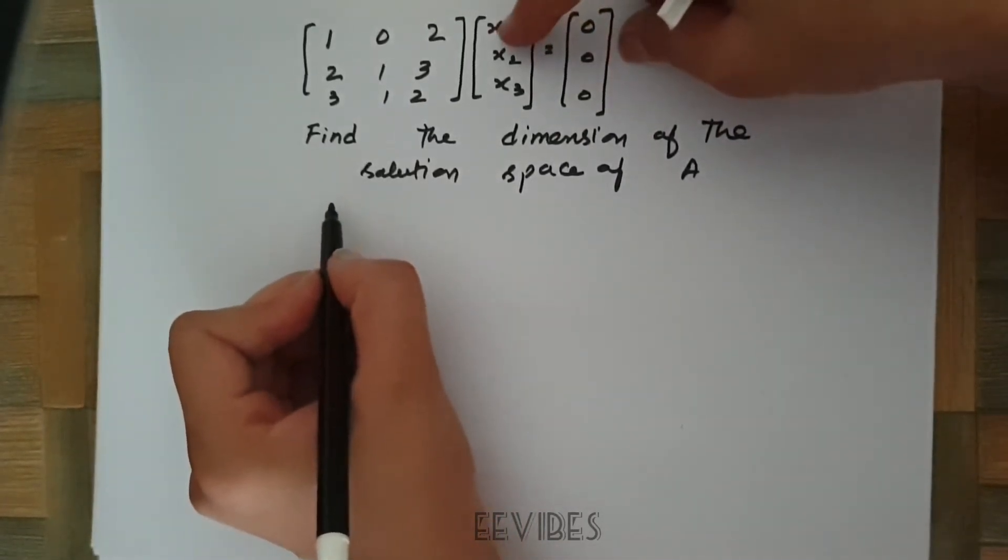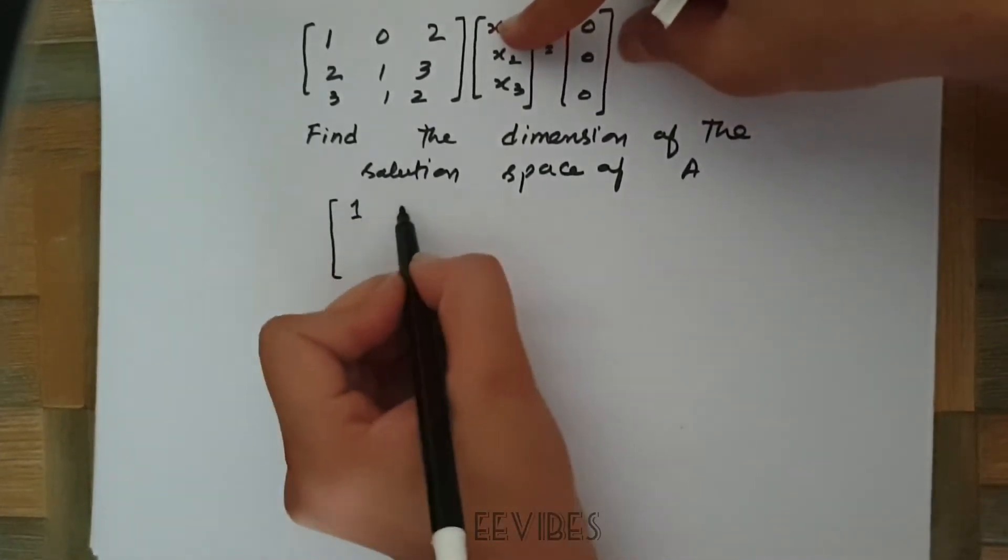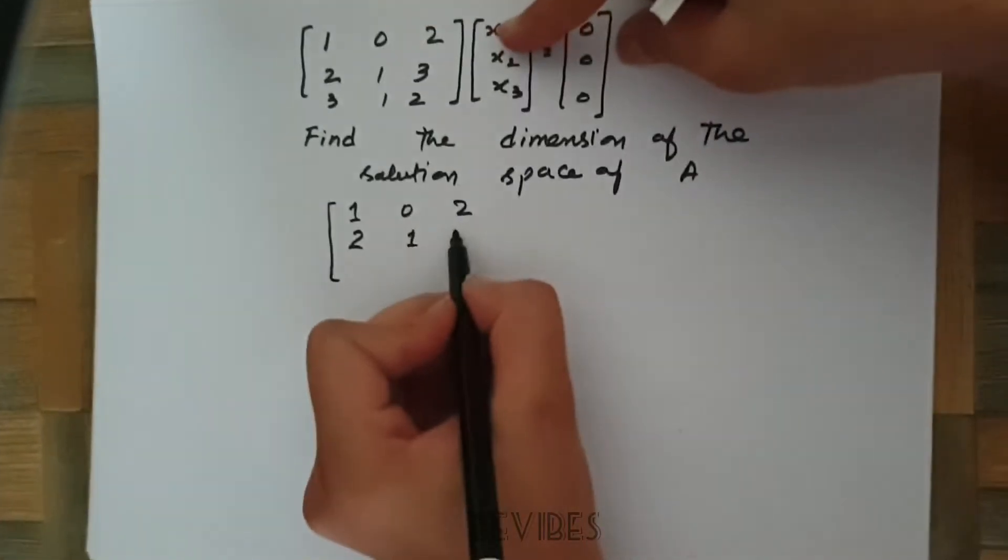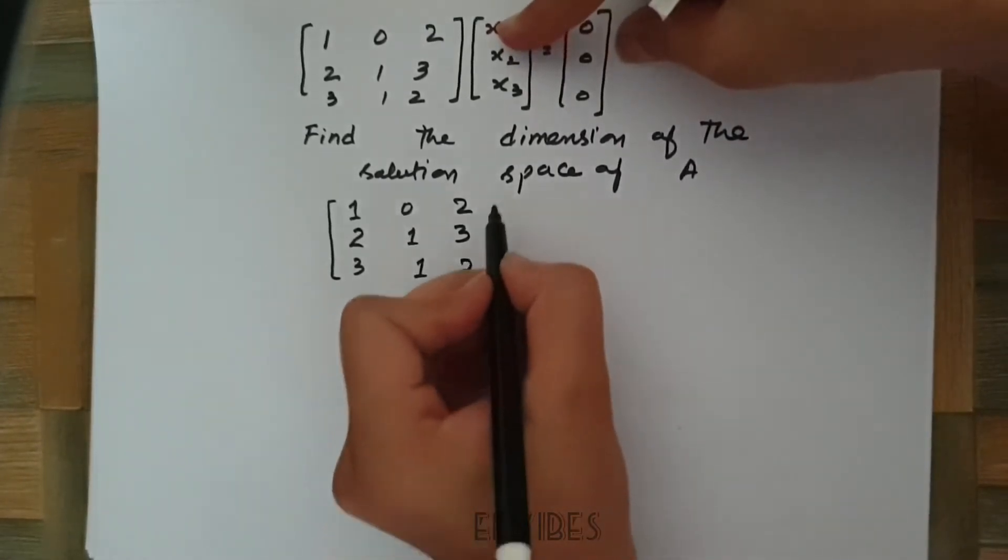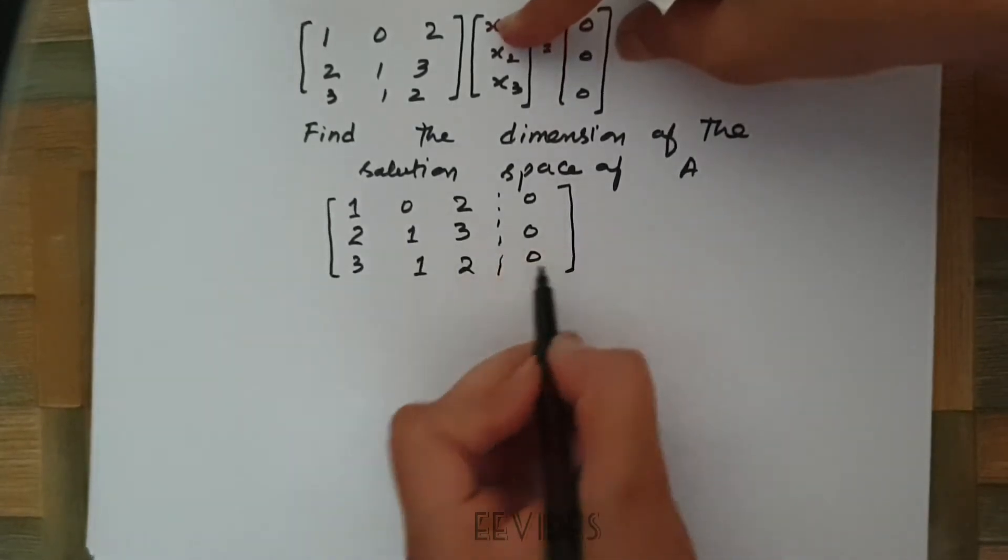I will apply the Gauss elimination method for finding out the solution of this system. So let's start forming its augmented matrix, and then I will be applying the elementary row operations for converting this system into an upper triangular matrix.